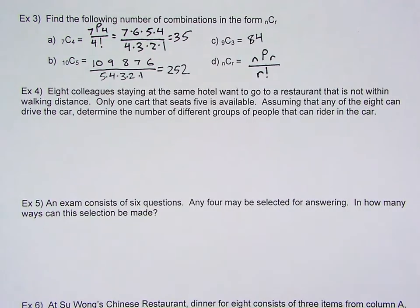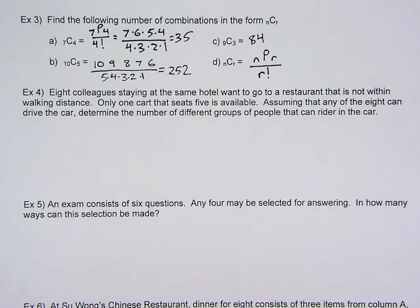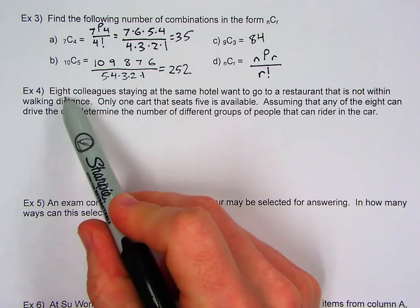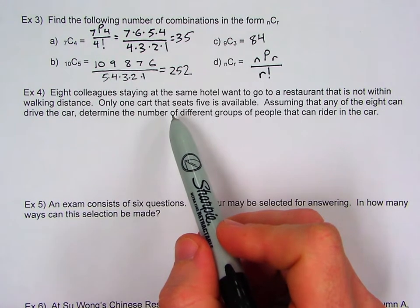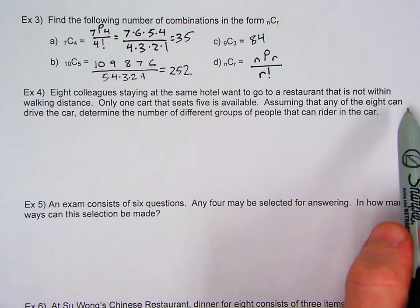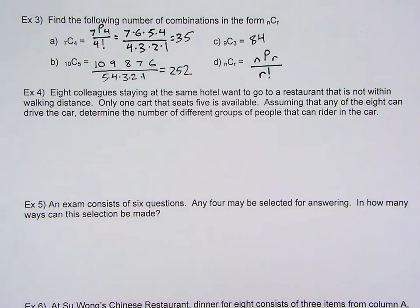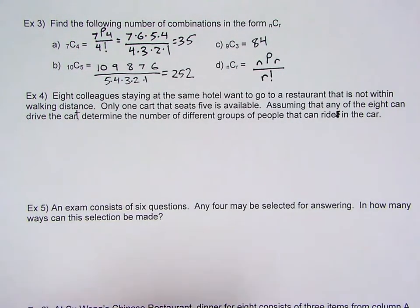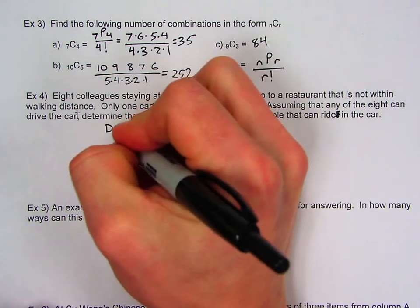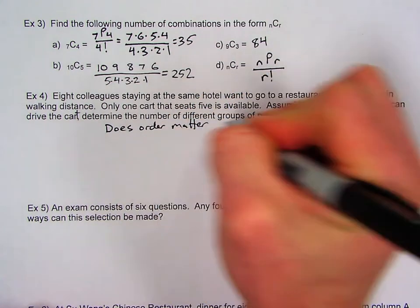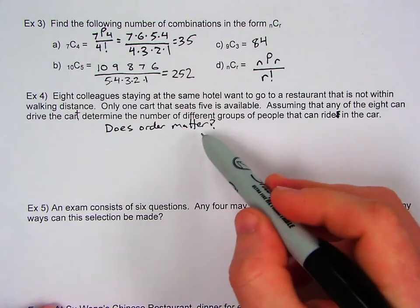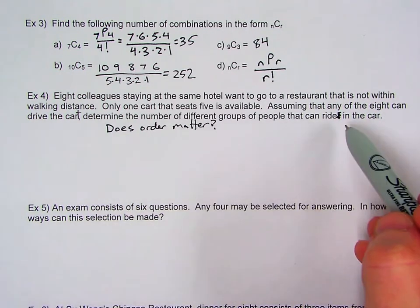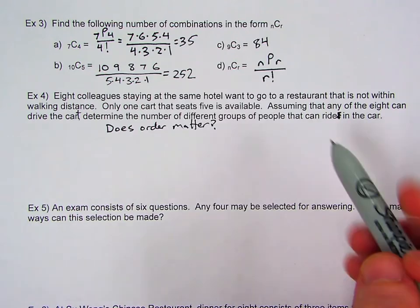Alright. So let's try some word problems here. We have eight colleagues staying at the same hotel. They want to go to a restaurant that's not within walking distance. There is a golf cart available that seats five. And that's a problem because we have eight people, and we're trying to get into a golf cart that seats five. And we're going to be legal about this and not hang off the roof. So it says, assuming that any of the eight can drive the cart, determine the number of different groups of people that can ride in the car. So we ask ourselves, does order matter? It's got to be your first thought.